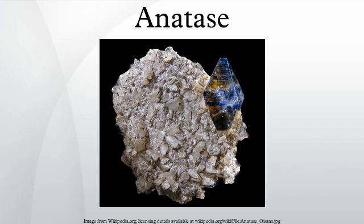Anatase is one of the three mineral forms of titanium dioxide, the other two being brookite and rutile. It is always found as small, isolated and sharply developed crystals, and like rutile, a more commonly occurring modification of titanium dioxide, it crystallizes in the tetragonal system.